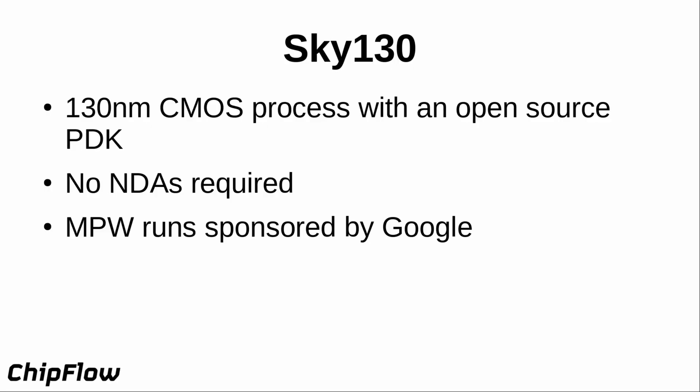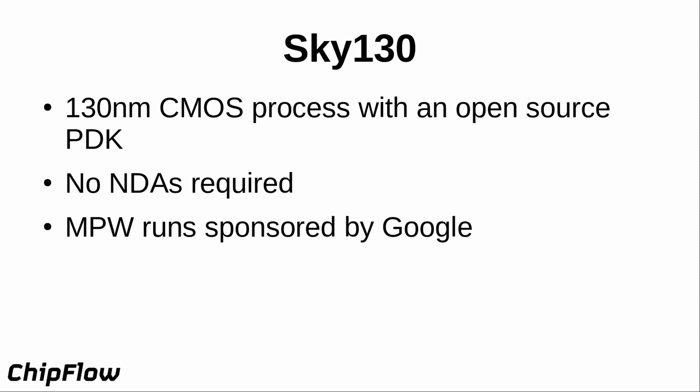Skywater 130 is the process we're targeting at the moment. It's a 130 nanometer CMOS process with an open source PDK — no NDAs required. Usually to access the design rules needed to build a chip you'd have to sign a non-disclosure agreement, which would prevent open sourcing your work. Skywater 130 also has multi-project wafer runs sponsored by Google for open source projects, so you're not spending the tens of thousands of dollars normally needed for a tape-out — you can have a go at building a chip for free.